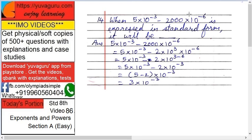2000 into 10 raised to minus 6 is not a standard form. Why? In standard form, there should only be one digit. Means like this 5. And remaining everything, all the zeros should be converted into 10 raised to something.